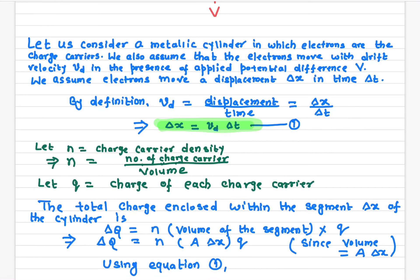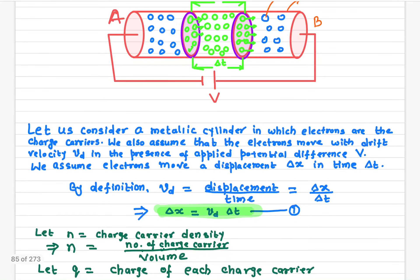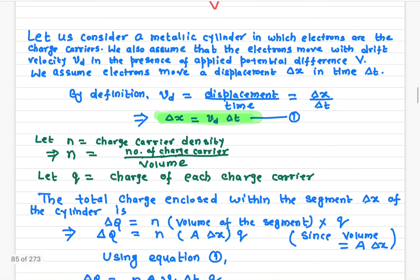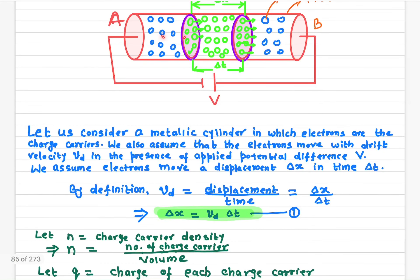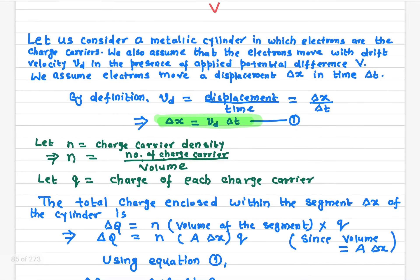The charge carrier density n is defined as the number of charge carriers divided by the volume — how many charge carriers you have within a volume. The more charge carriers, the greater the charge carrier density. And we define Q as the charge of each charge carrier — it could be electrons or ions. That's the magnitude of the charge of each charge carrier.